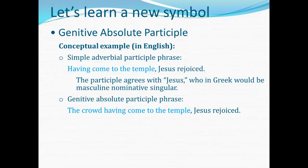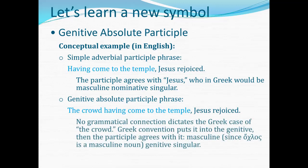So what case would 'crowd' be in? If it were in the nominative case, as you begin to read that sentence you would think that 'crowd' is going to be the subject of an ordinary verb coming later — but that's not the way it works. So 'crowd' is placed in the genitive to signal that it's not going to be part of the governing clause. And when we see the participle following it in the genitive case, we have the genitive absolute construction — 'when the crowd came to the temple, Jesus rejoiced.' The Greek convention of putting the referent into the genitive, then the participle agreeing with it, flows very smoothly. So no grammatical connection dictates the Greek case of the crowd; the Greek convention is to put that word into the genitive, then the participle agrees with it — masculine, genitive, singular. That's the genitive absolute.